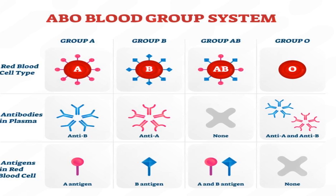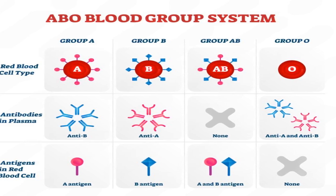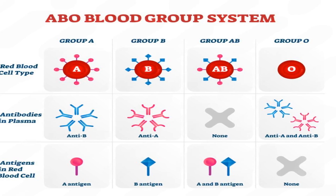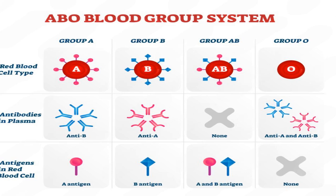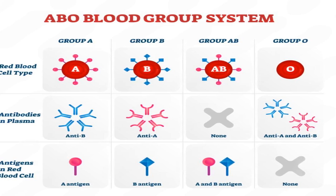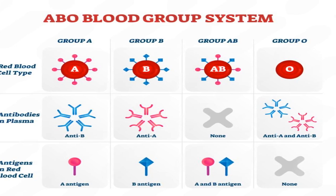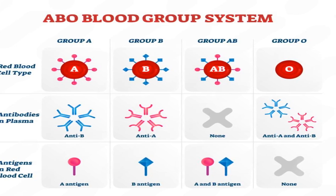Type AB has both A and B antigens on RBCs, with no antibodies against A or B in the plasma. Type O has no A or B antigens on RBCs, but both anti-A and anti-B antibodies in the plasma.